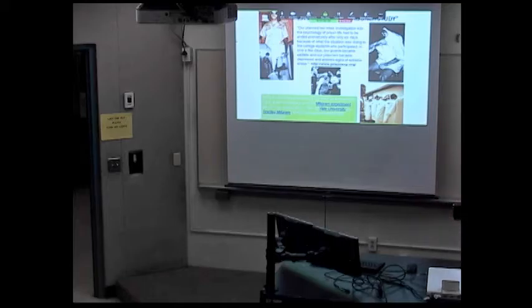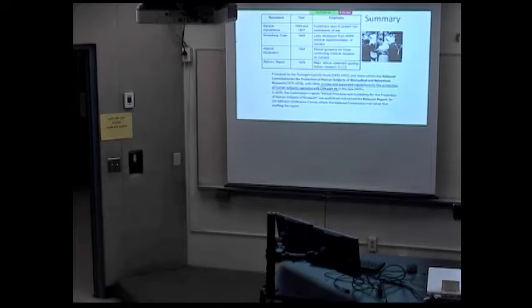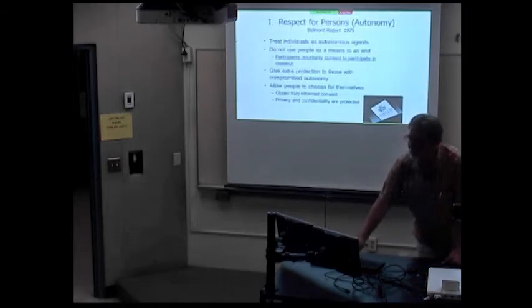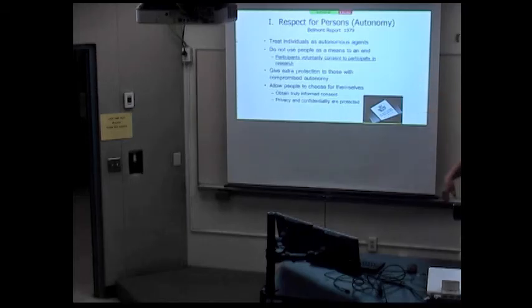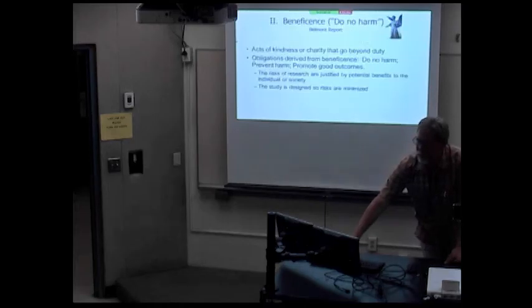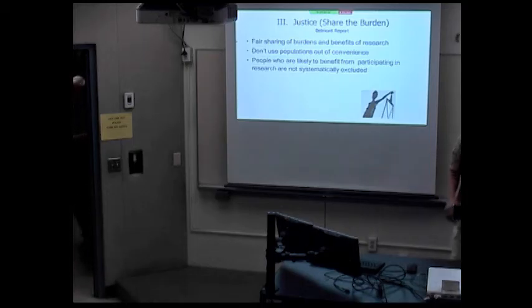One thing that's interesting is that both Zimbardo and Milgram went to high school together. These studies, but mostly the Tuskegee syphilis study, drove the government to form a commission to investigate how human subjects are used in biomedical and behavioral research. It led to what's called the Belmont Report. It has three ethical principles: respect for persons or autonomy - treat people as autonomous agents that can make their own decision. Beneficence - do no harm. This whole idea of benefit to harm. And then justice - don't use populations out of convenience. There's certain safeguards that have to do with justice.